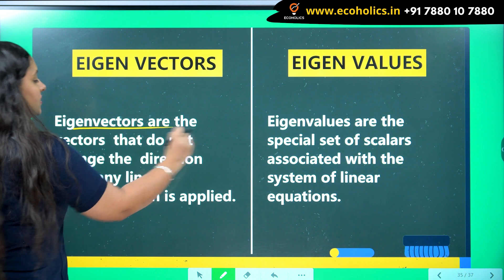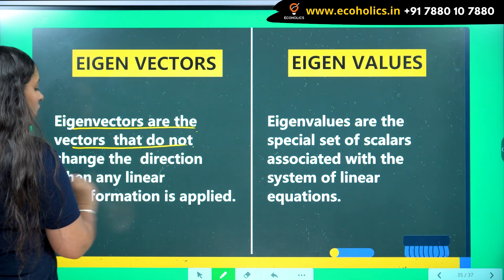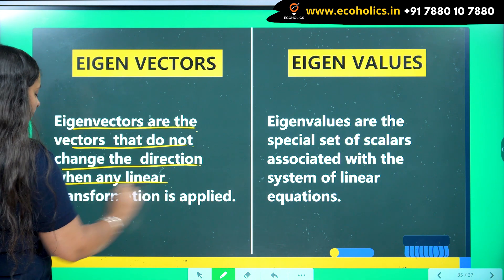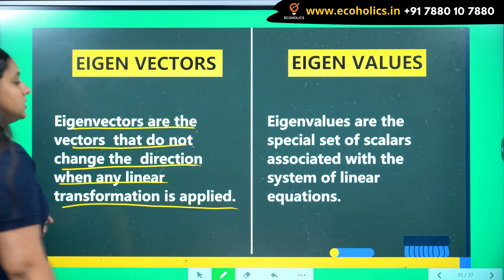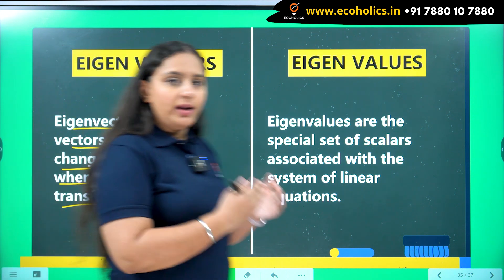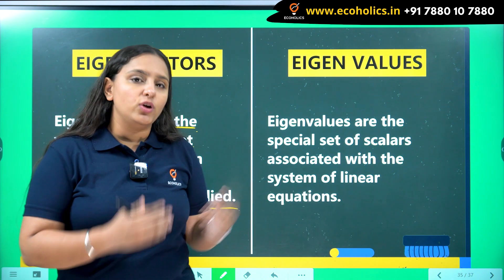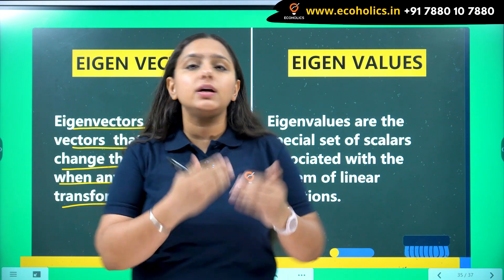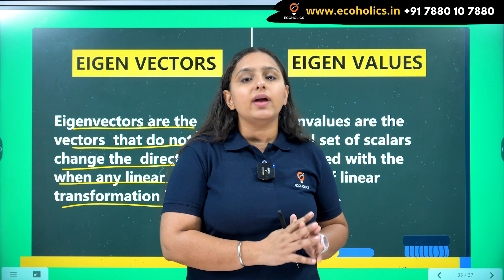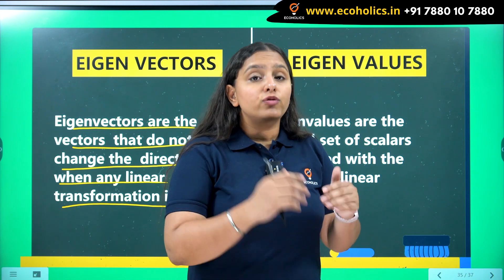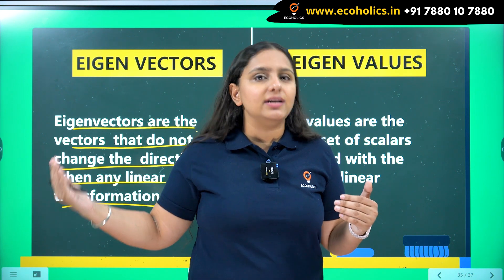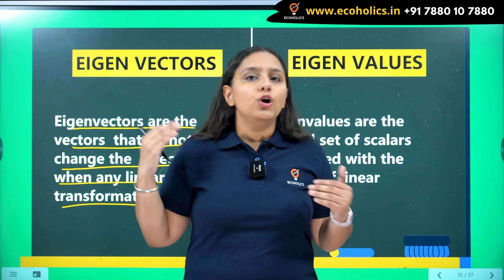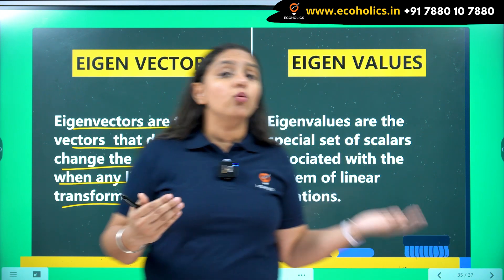Eigenvectors are the vectors that do not change the direction when any linear transformation is applied. So when you are working in the vector space, when you are working with vectors, and if you try to do some kind of linear transformation, eigenvectors are those things which will never change the direction of the given vector with which you are working.